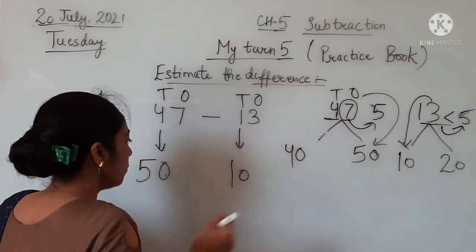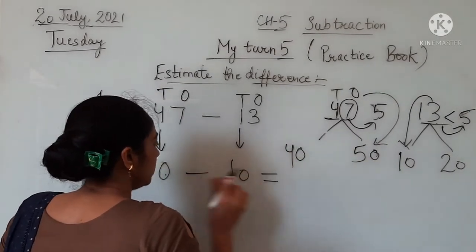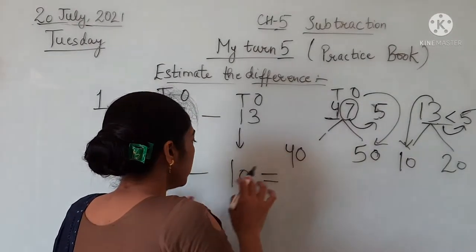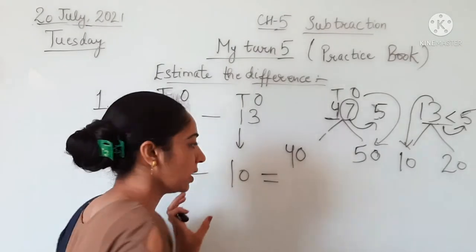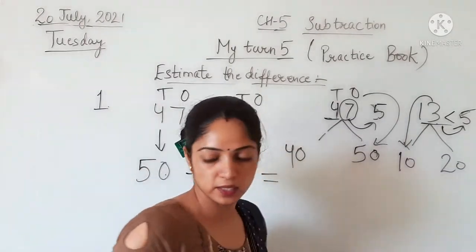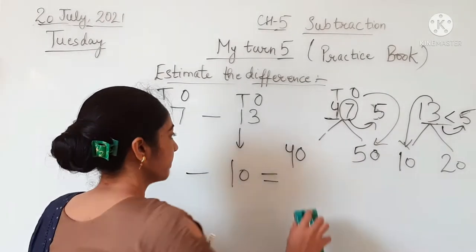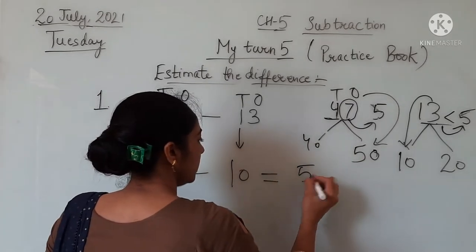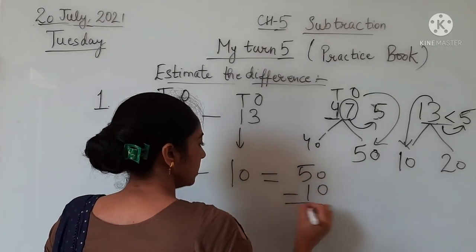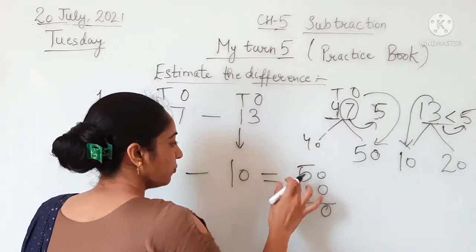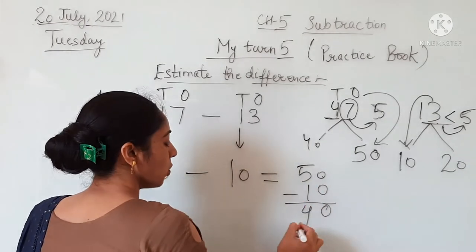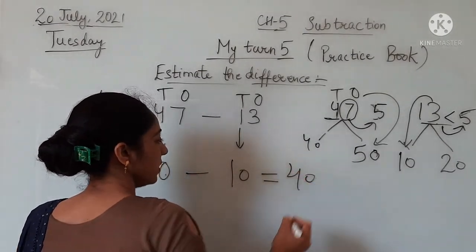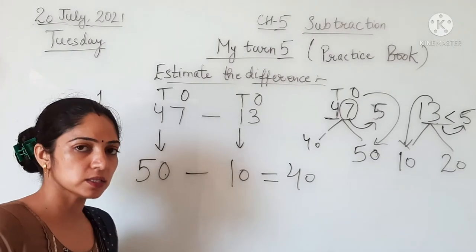Now we find the difference between 50 and 10. When we subtract: 50 minus 10, 0 minus 0 is 0, and 5 minus 1 is 4. That is 40. 40 is our answer, our required answer.